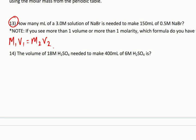So, it wants us to find how many milliliters of the initial solution do we need in order to make 150 milliliters of a 0.5 molar solution. Okay, so, what's our M1, our starting molarity? It's going to be, we're starting with 3.0 molar.